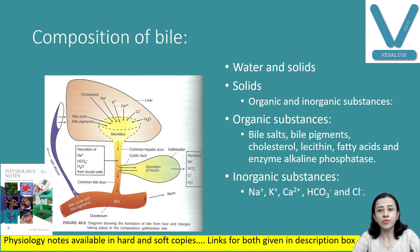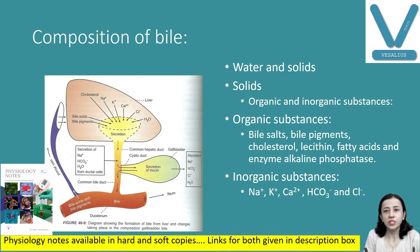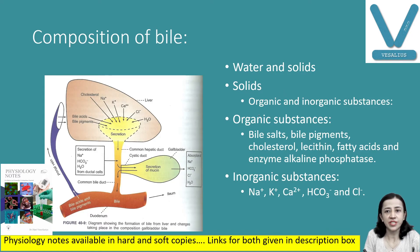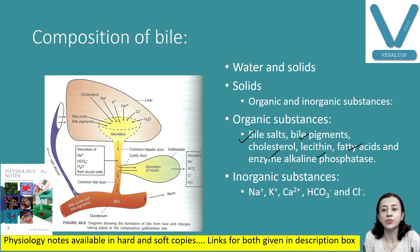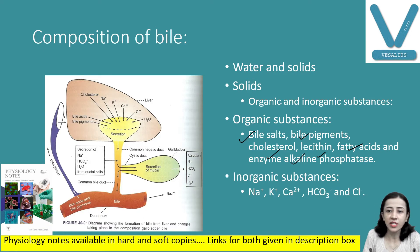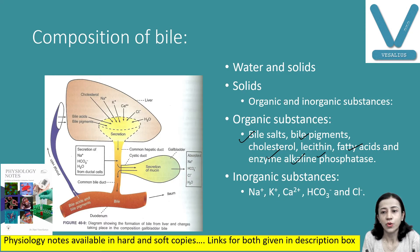Composition of bile mainly consists of water and solids. Solids are inorganic and organic, like other juices of the digestive tract. Organic substances are bile salts, bile pigments, cholesterol, lecithin, fatty acids, and alkaline phosphatase enzymes. Inorganic substances are all your ions: sodium, potassium, calcium, bicarbonate, and chloride ions.